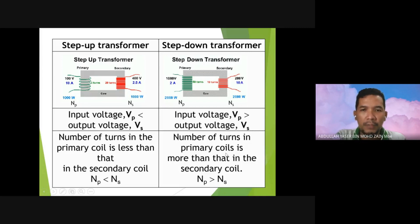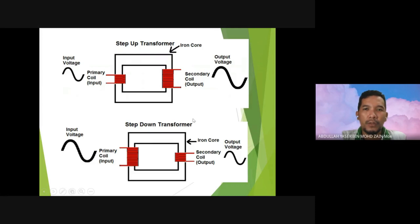The number of turns in primary coil is more than the secondary coil, so it will create step-down transformer. They will step down the voltage. It is crucial to understand that this transformer is only used for AC current only, alternating current only. It cannot be used for direct current DC.